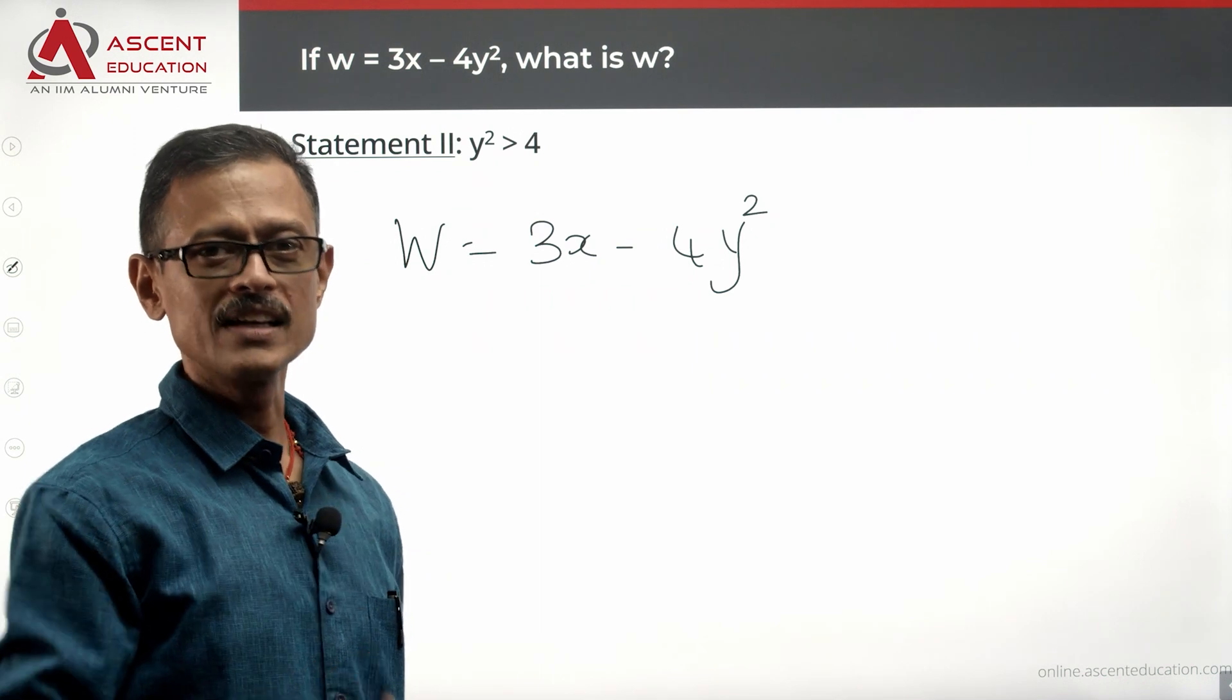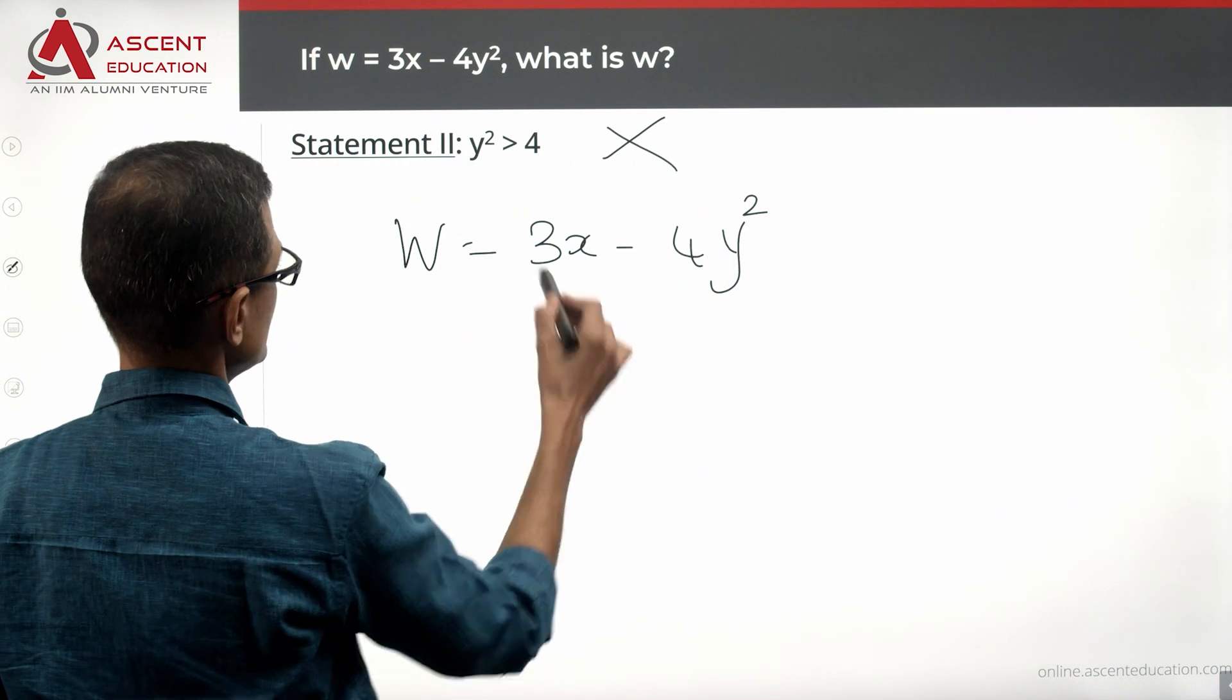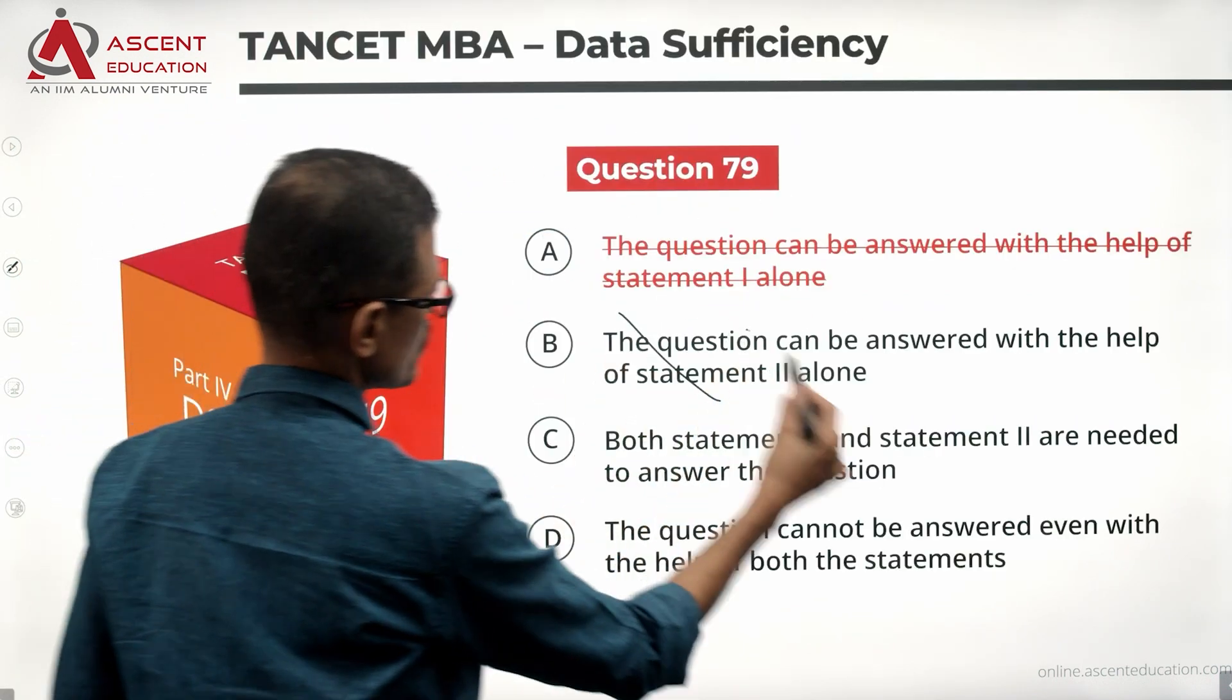it can be 4.1, it could be 20, it could be 200. Infinite possibilities are there. We do not know what x is, we don't even know what y² exactly is. Statement 2 alone is also not sufficient.